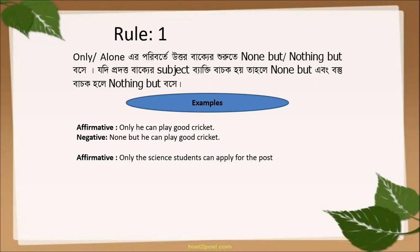Here is another example. This is also an affirmative sentence and you have to make it negative. The sentence is: 'Only the science students can apply for the post.' Here 'only' is used before a subject indicating some persons. So before this subject, we have to replace 'only' by putting 'none but'. Where a person is used as a subject, we put 'none but'; where a thing is working as a subject, we put 'nothing but'.